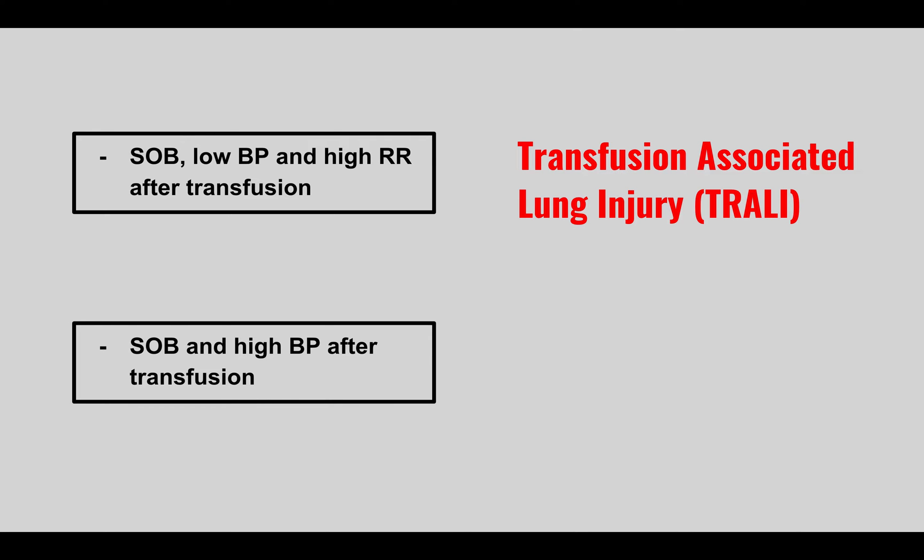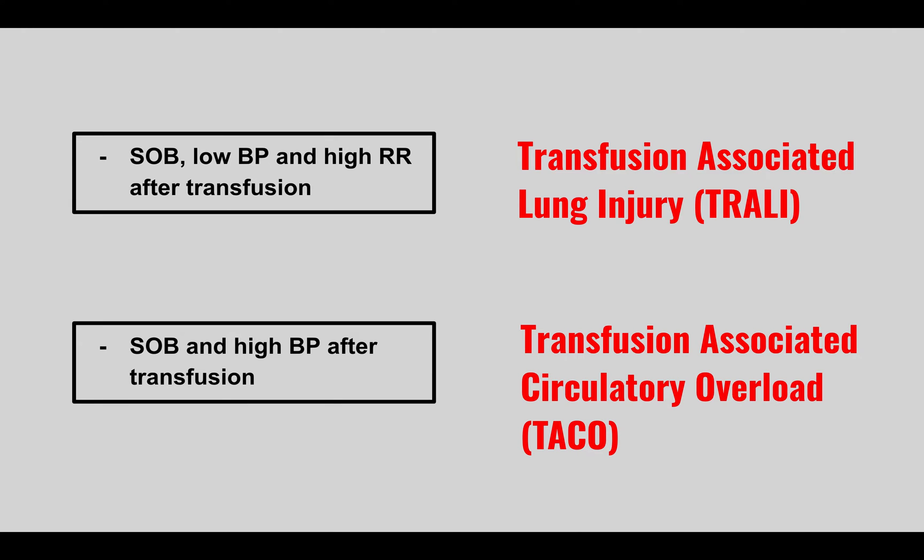Someone presenting with shortness of breath, low blood pressure, and high respiratory rate after a transfusion has TRALI — transfusion-related acute lung injury. This is always tested against the next one: shortness of breath and high blood pressure after transfusion, which is TACO — transfusion-associated circulatory overload. The key difference is that TACO is a volume overload causing high blood pressure, while TRALI is a respiratory problem with fluid buildup in the lungs causing a higher respiratory rate.